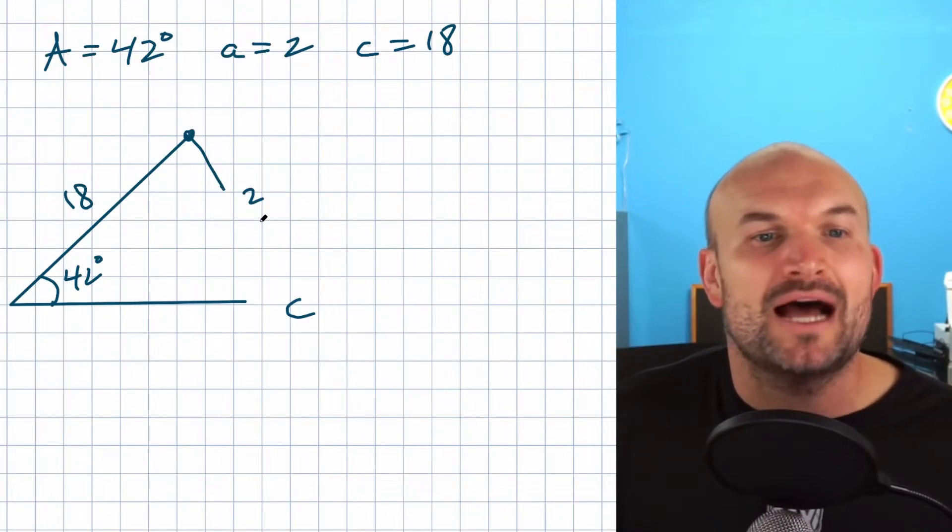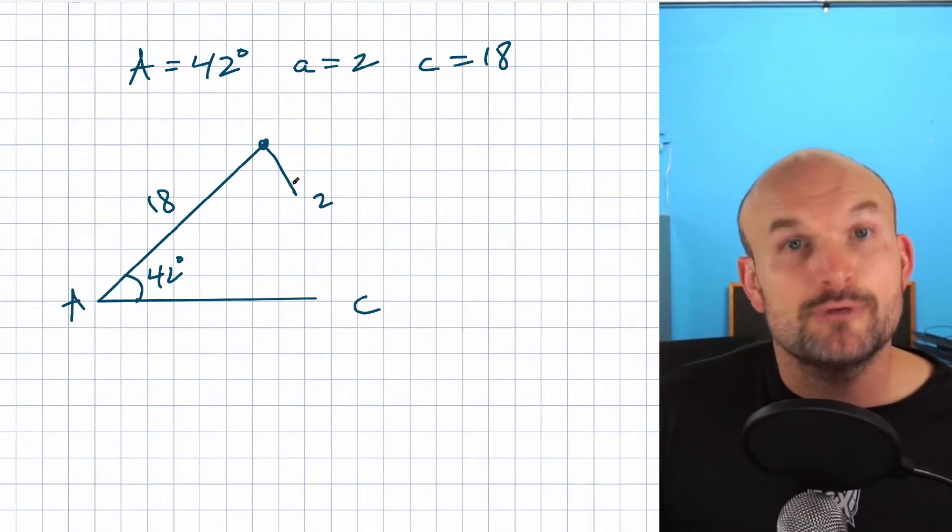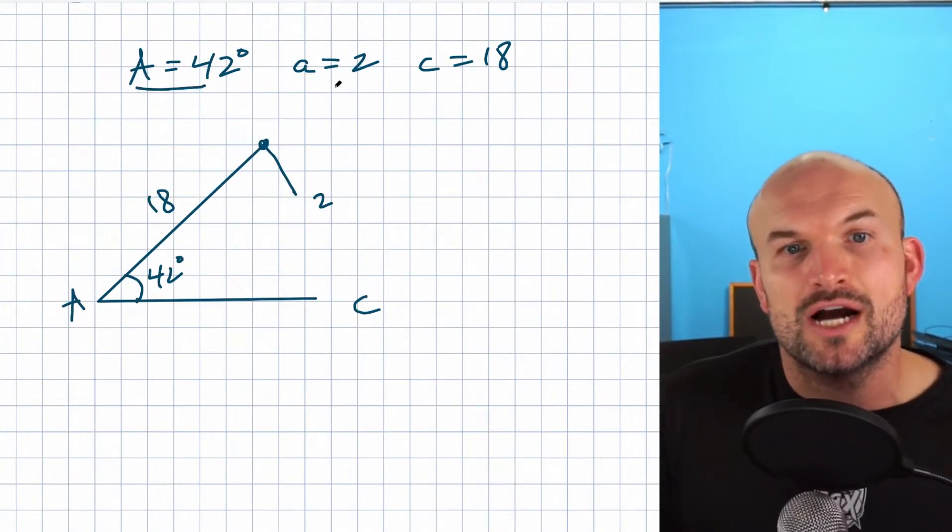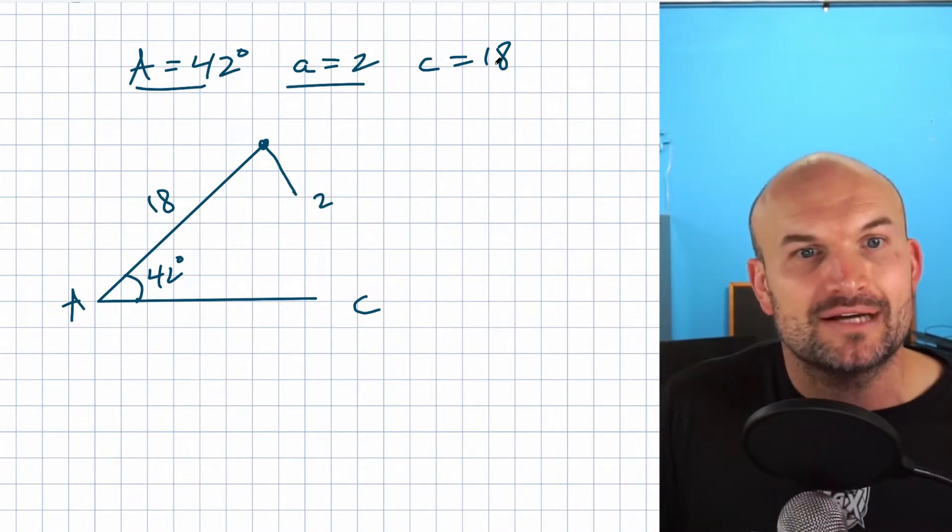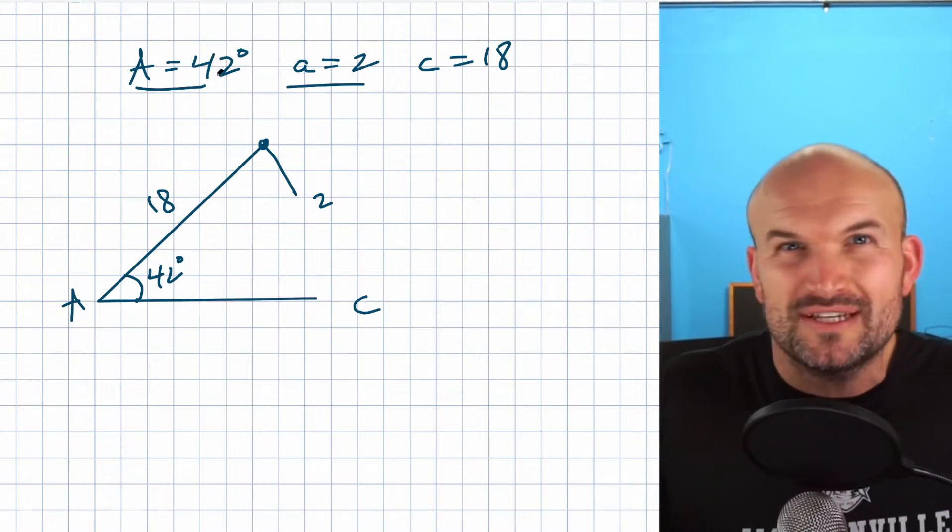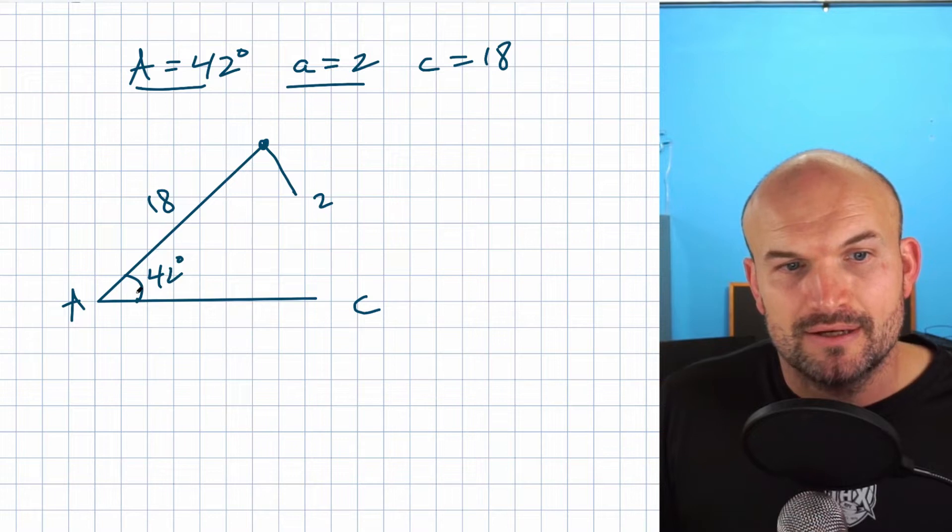This would be an easy example of how you could quickly identify if you're going to have no triangle as a solution. Basically, what you want to do is go ahead and make sure you draw your two angles opposing each other. If this angle is so much shorter compared to that angle, and you have an angle that's roughly like 42 degrees, obviously if this was like 12 degrees, that might be a different situation.